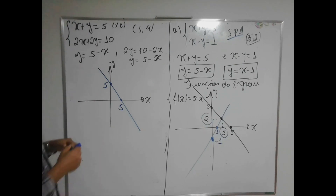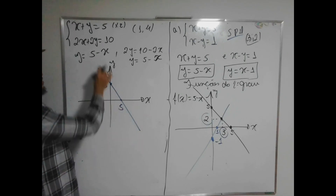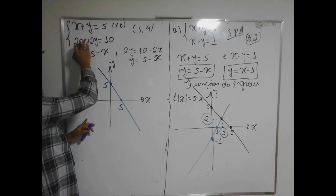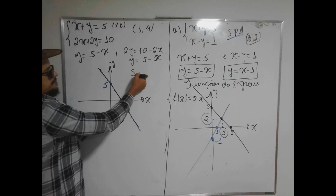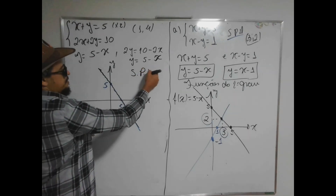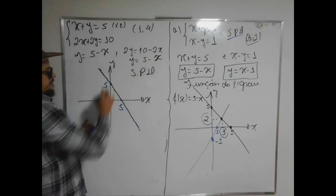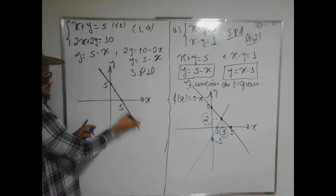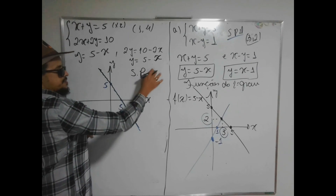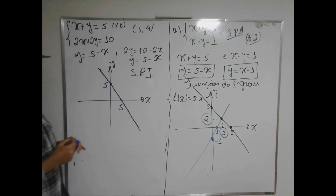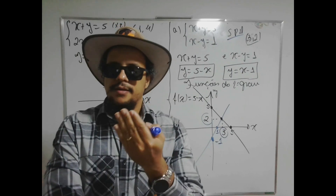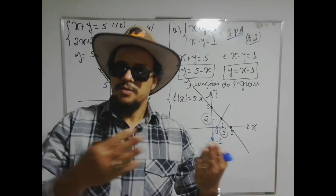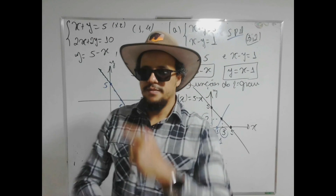Quando tenho um sistema possível e indeterminado, o gráfico de uma reta coincide com o da outra — retas paralelas coincidentes. Isso representa o caso SPI: infinitas soluções, pois toda solução que serve em cima serve também embaixo.